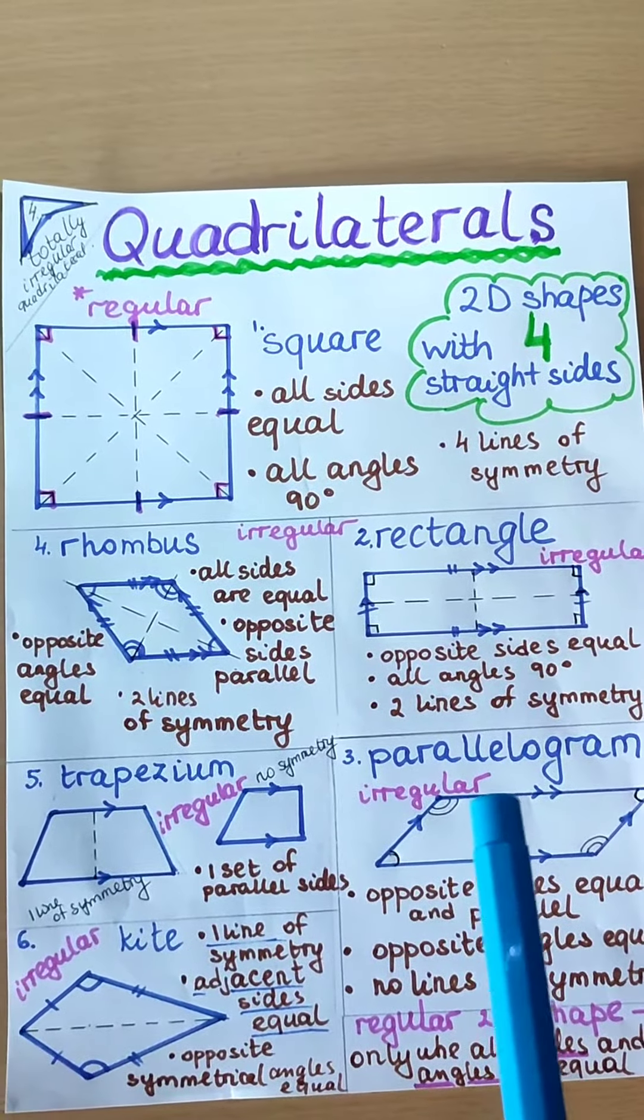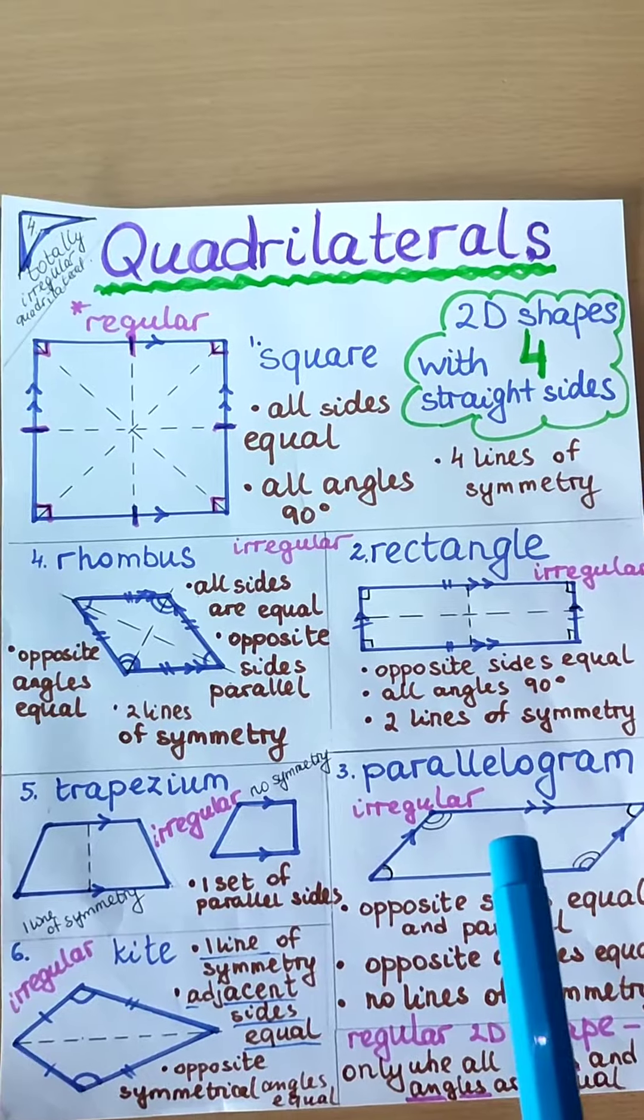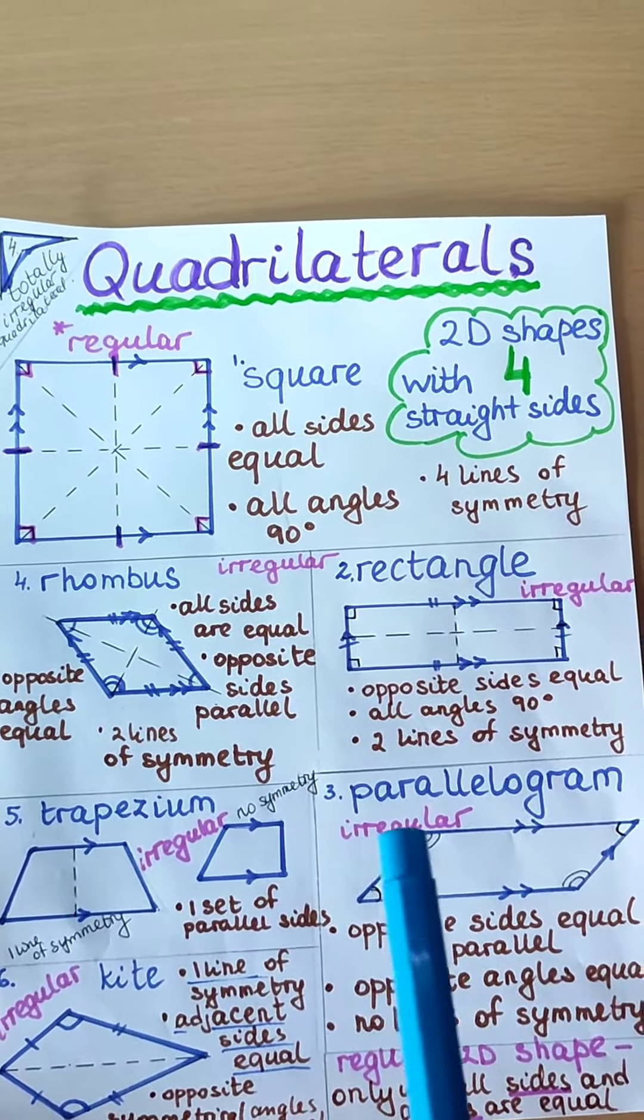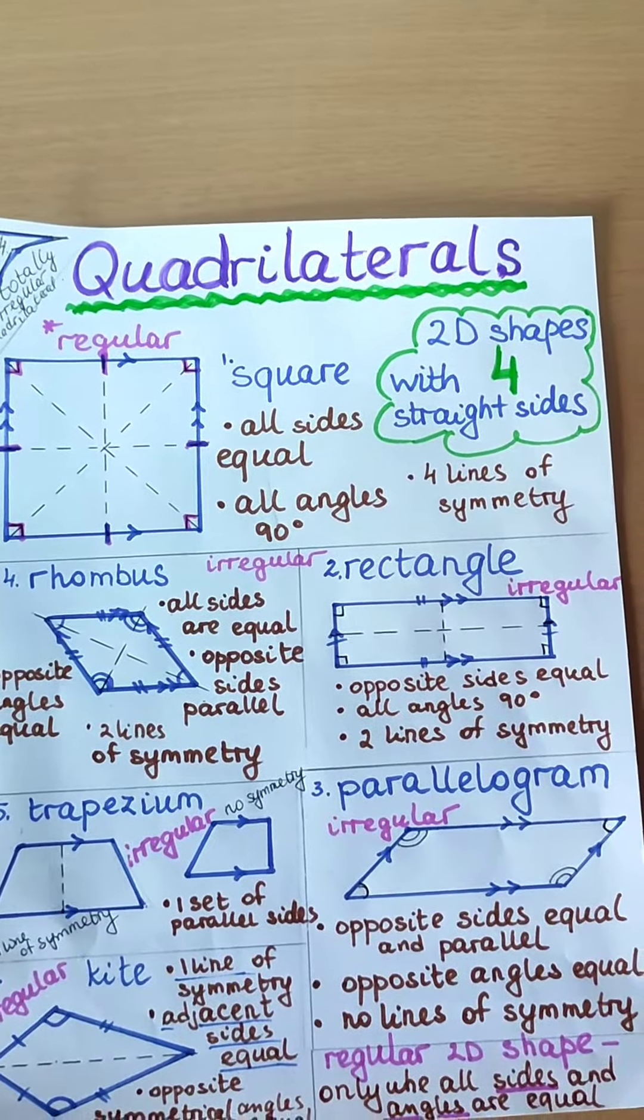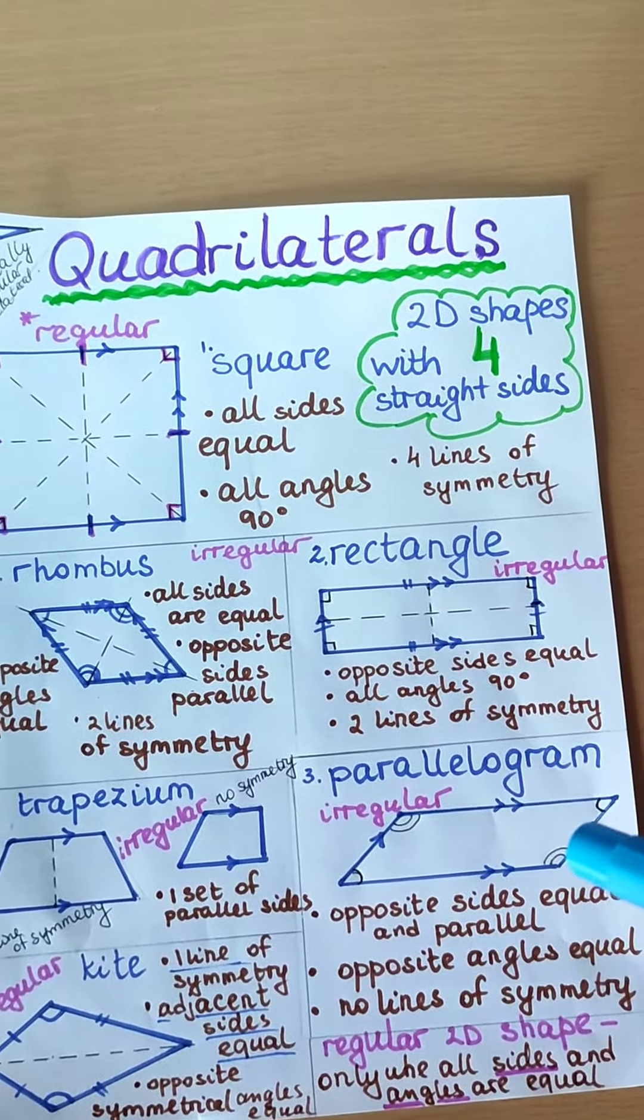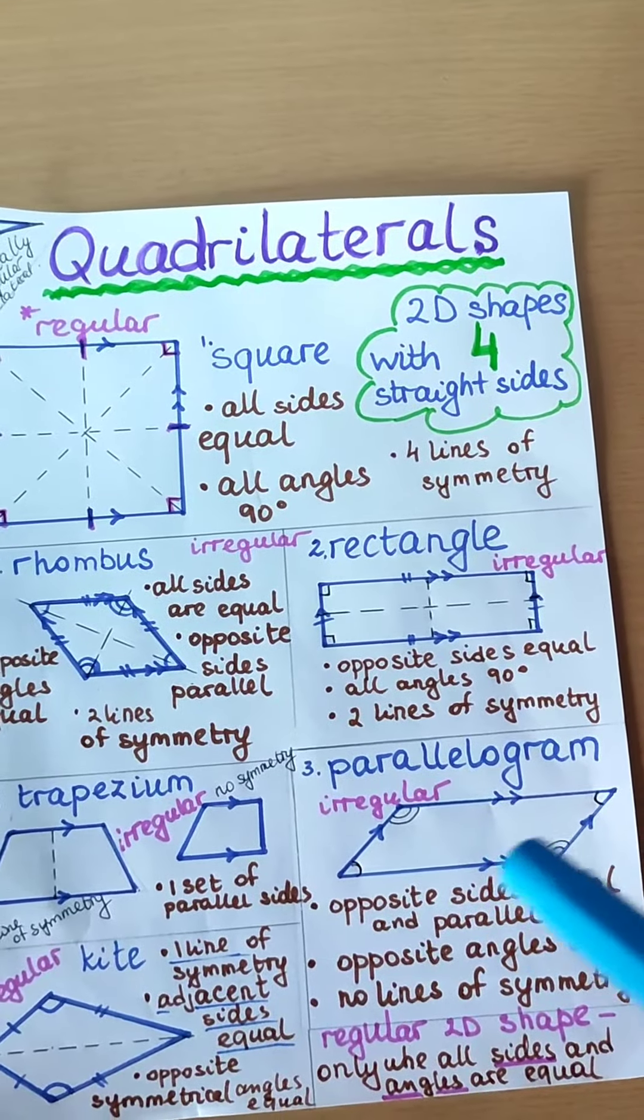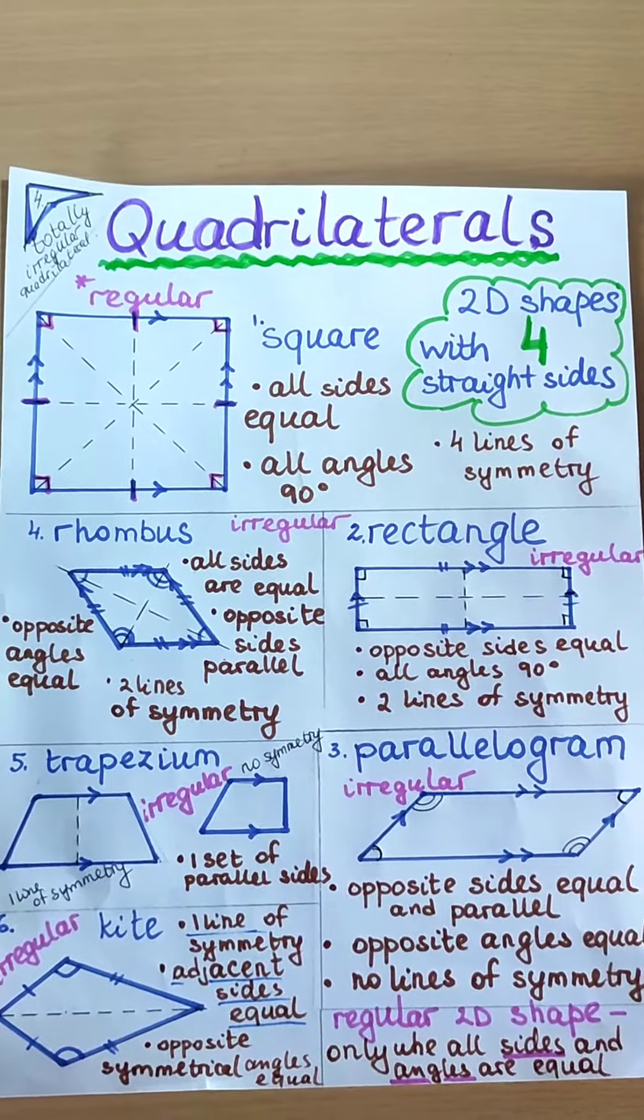This is a parallelogram. Parallelogram is like a slanted rectangle. It's got 2 sides which are the same, the opposite sides, the same length. Also has 2 corners, opposite corners which are the same. It hasn't got any lines of symmetry.